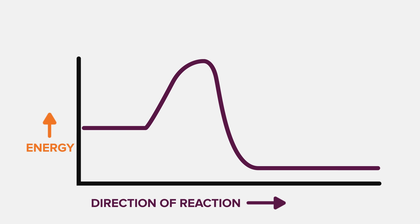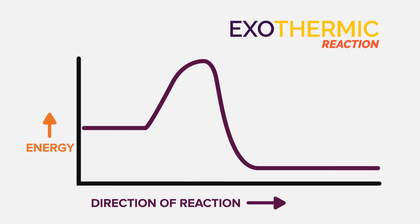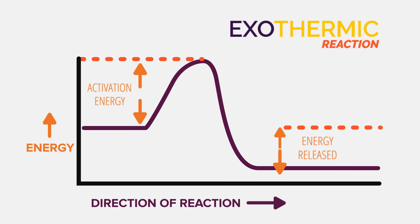Because in exothermic reactions energy is given out to the surroundings, the energy of the reactants is higher than the energy of the products. Hence the energy curve for exothermic reactions will look like this.